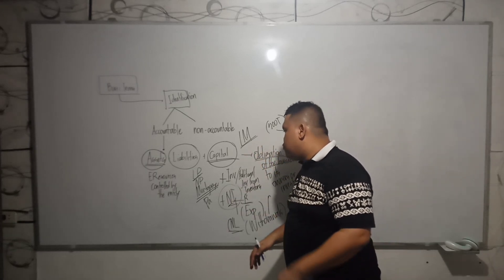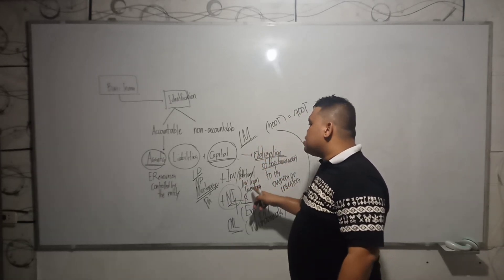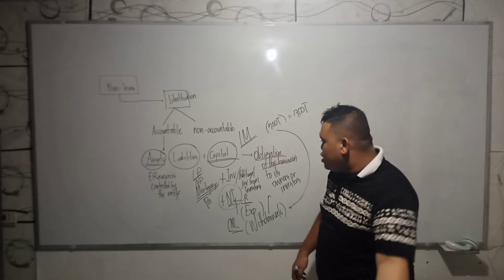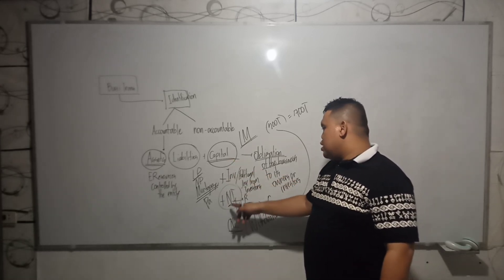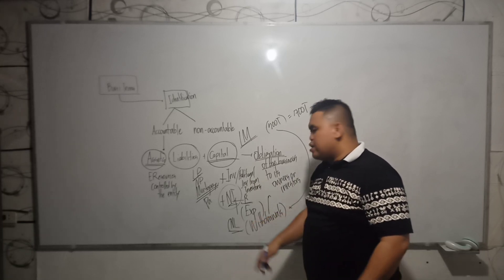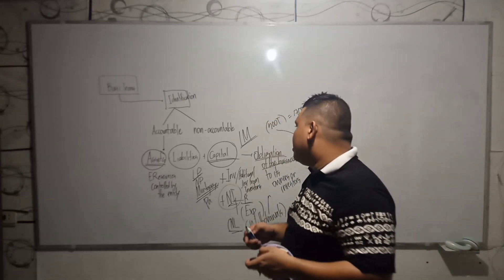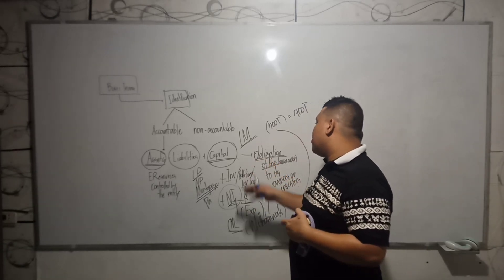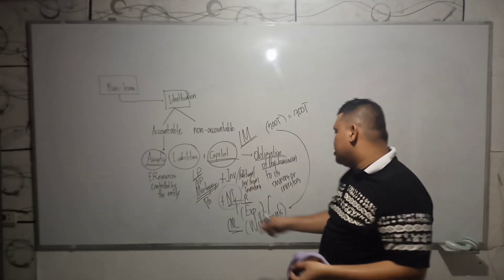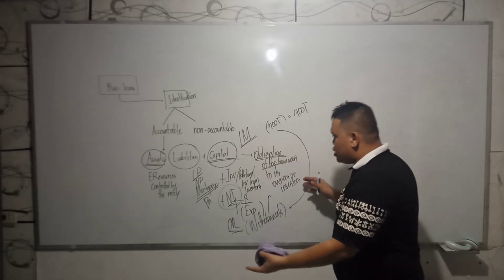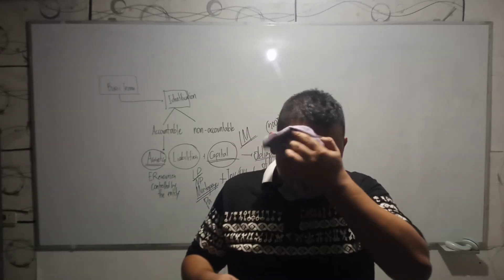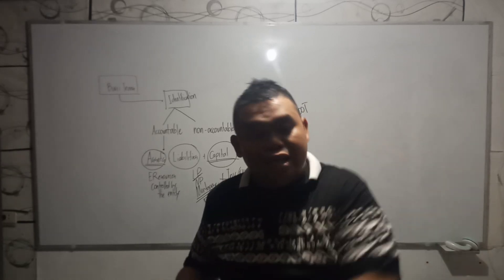Capital is affected by: first, the investment or additional investment from owners — this will grow; if there is a net income, it will also grow because good performance is attributable to the owners; it will be deducted with a net loss because the risk of business performance falls on the owners. If owners withdraw something, that is deducted from the obligation. Our point of view, as bookkeeper or accountant, is of the entity itself.